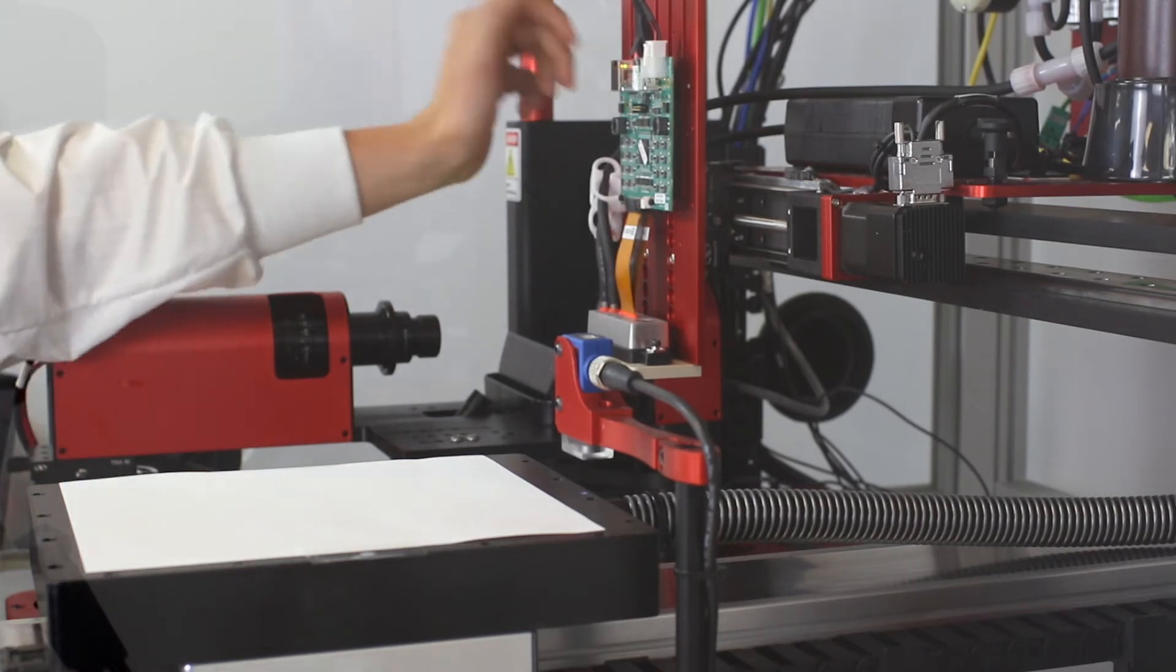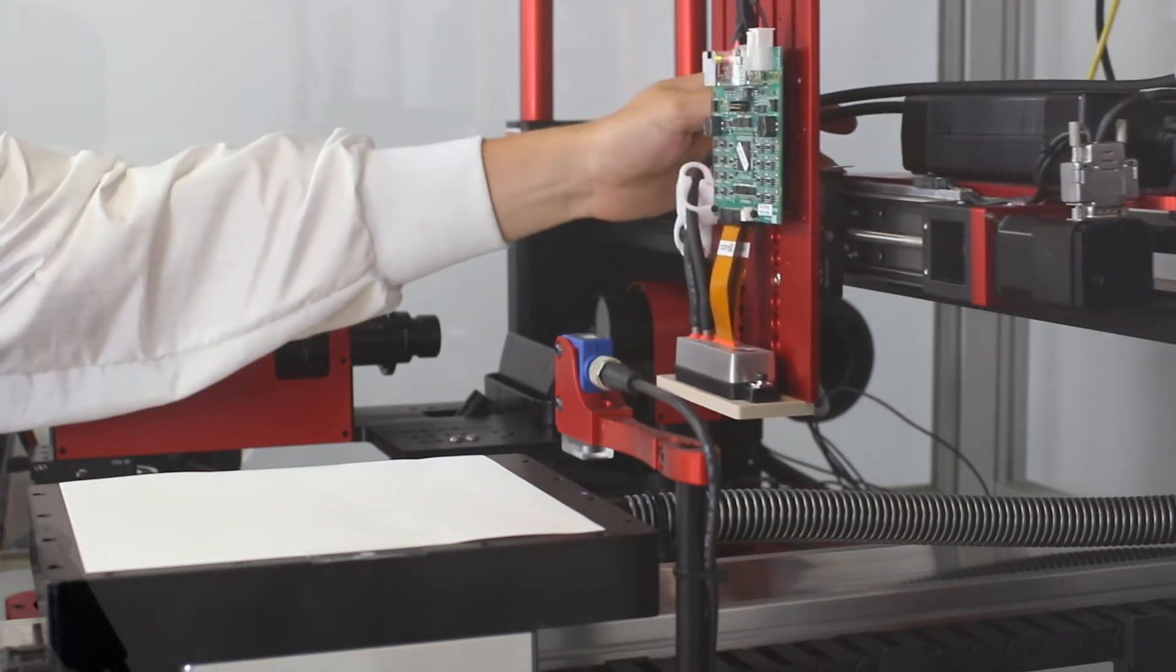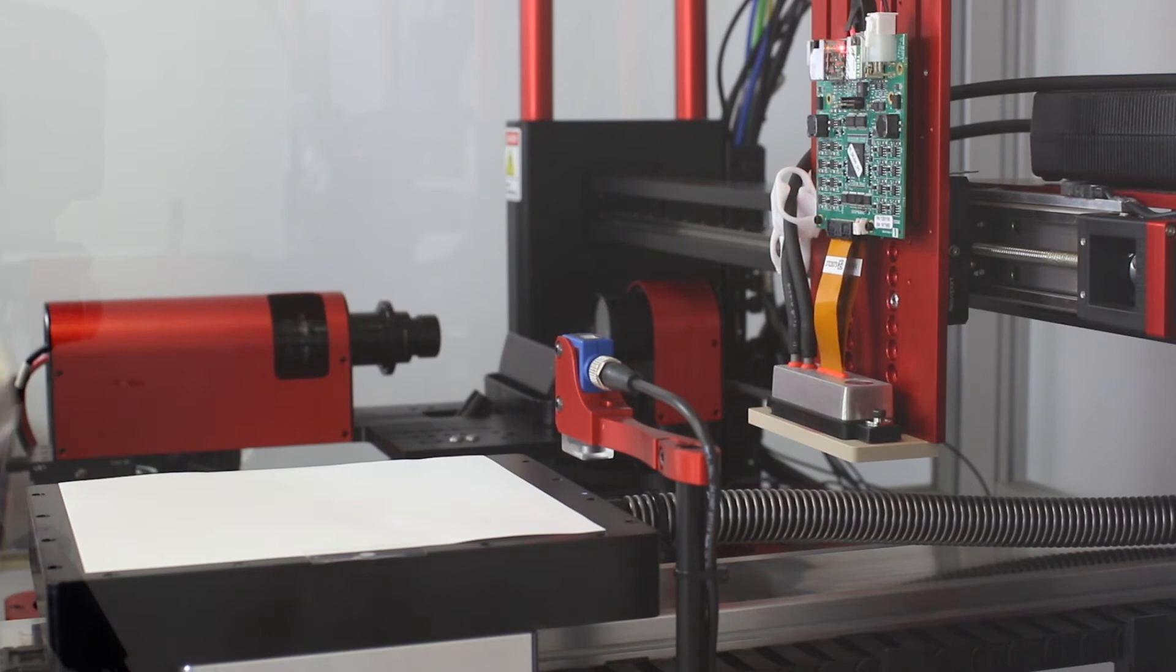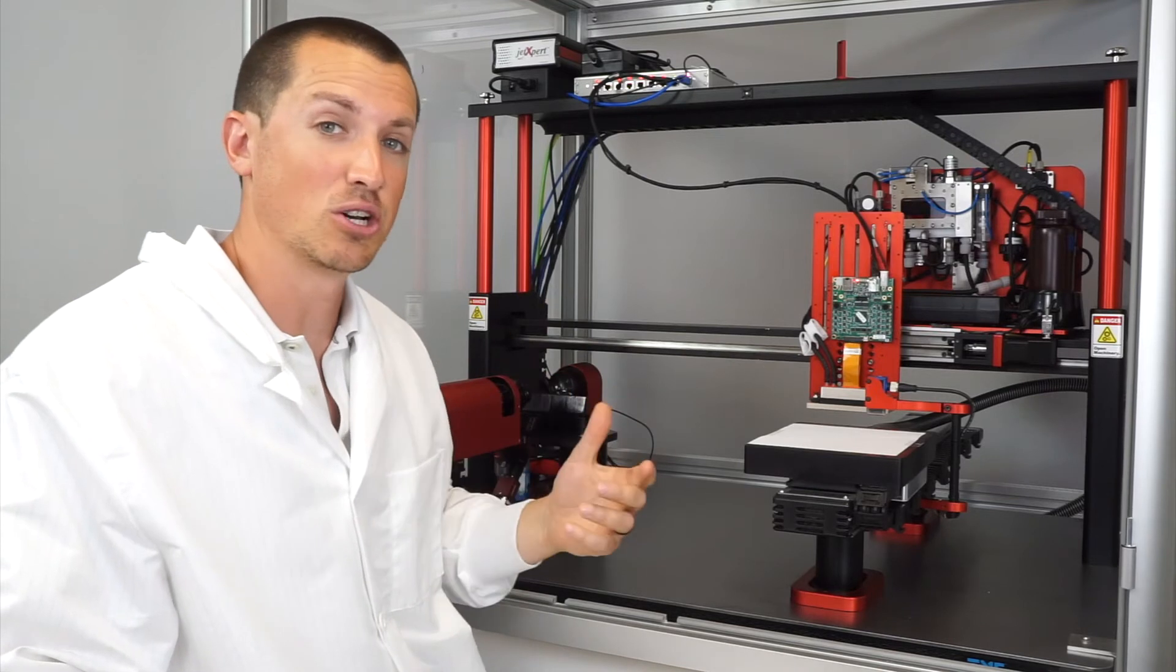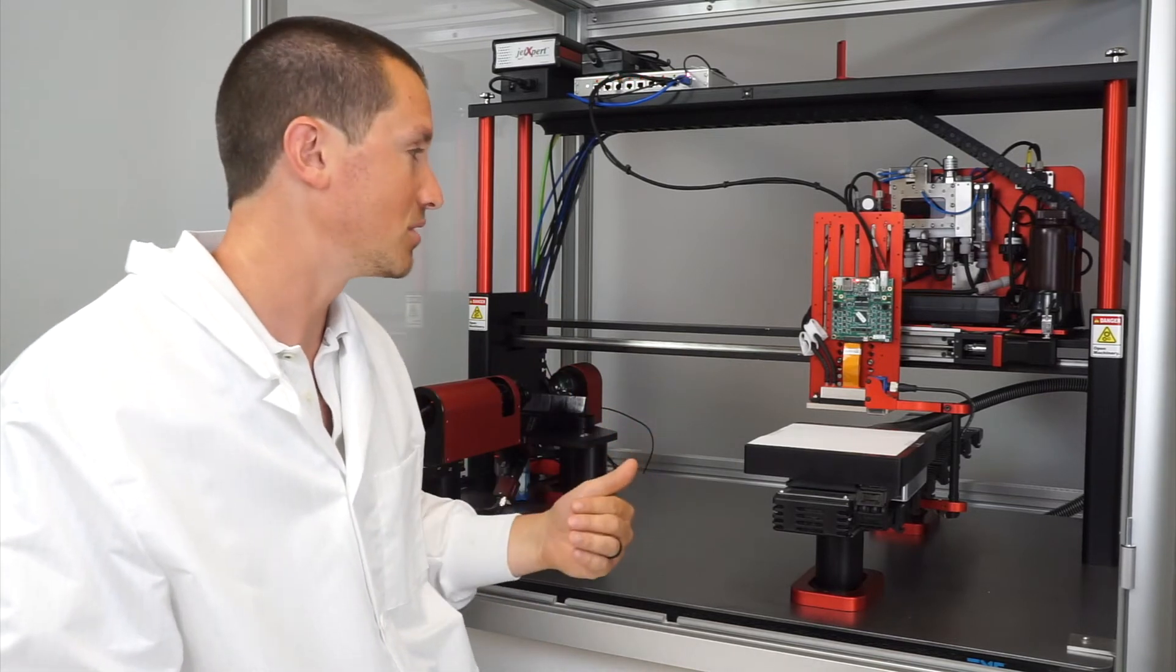After you've done your drop watching and testing different settings, we've added that ability to the printing side as well, where you can print a different swath with each of those settings to quickly compare the print results.